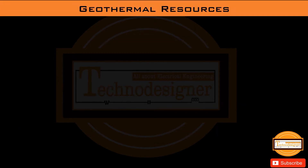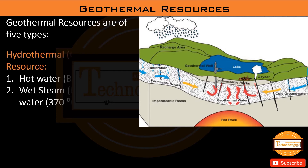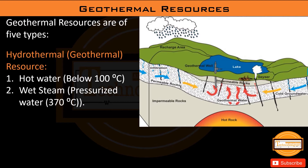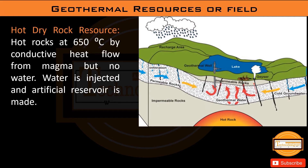Geothermal resources are of five types. Hydrothermal resource: found inside and above the Earth, with hot water below 100°C and wet steam with pressurized water at 370°C. Vapor-dominated resource: dry saturated steam at 350°C, fed directly to the turbine. Hot dry rock resource: hot rocks at 650°C heated by conductive heat flow from magma but with no water, so water is injected to create an artificial reservoir.